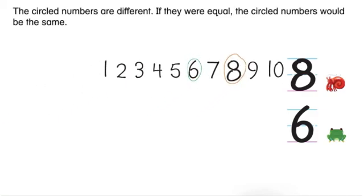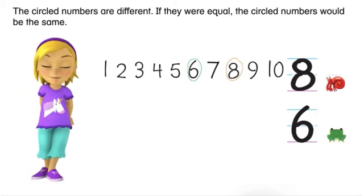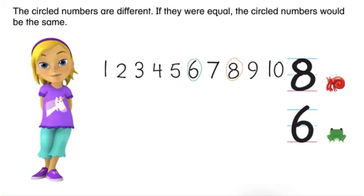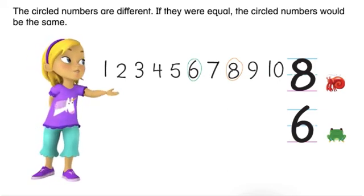The circled numbers are different. If they were equal, the circled numbers would be the same. Now you know how to compare groups by counting.